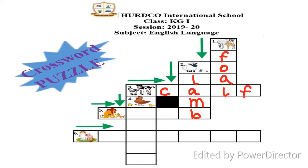Picture number four is a hen with her babies, and the hen's baby is called chick. The arrow beside the hen is pointing downwards, so we have to write chick in a downward manner: C-H-I-C-K.